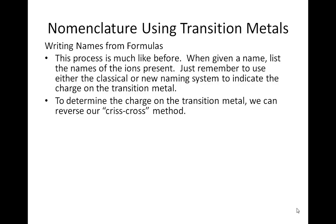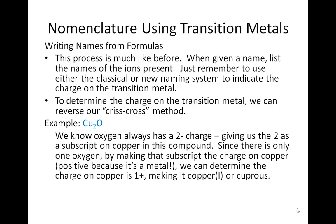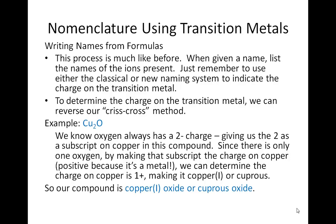To determine the charge on the transition metal, we're going to reverse the crisscross method. So if we look at Cu2O, we know oxygen always has a negative 2 charge, which gives us the 2 as a subscript on copper. Since there's only 1 oxygen, we take that understood 1 subscript and make it the charge on copper — positive, because metals form cations. So the charge on copper is positive 1, making it copper 1 or cuprous. We can name this compound copper 1 oxide or cuprous oxide.